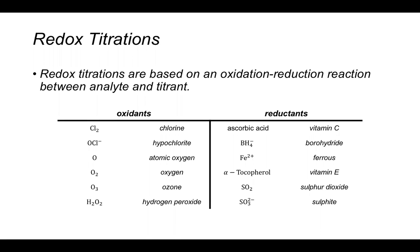Some common oxidants we might use, depending on what species is our analyte, include chlorine, hypochlorite, atomic oxygen, ozone, and hydrogen peroxide. The easiest to use in the lab are hydrogen peroxide and hypochlorite, although you can bubble oxygen and chlorine through in a different type of redox titration. Some common reductants are ascorbic acid, borohydride, ferrous iron (Fe²⁺), tocopherol (vitamin E, specifically alpha-tocopherol), sulfur dioxide, and sulfite.